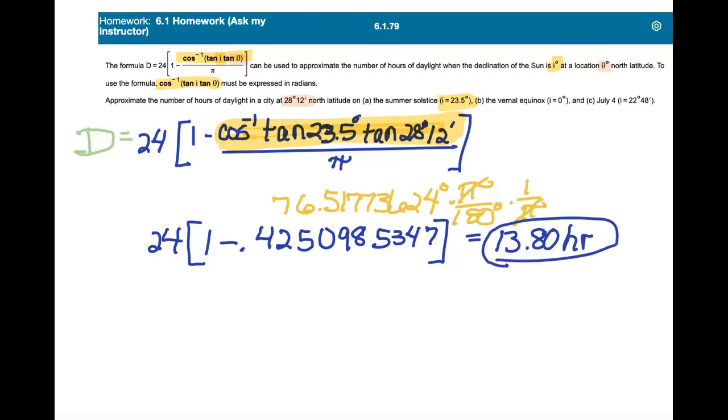Okay, so that's the answer to part A. Now I've got to do the same thing again for parts B and C. And in part B, the angle theta is now going to be zero degrees. So when I plug into my problem, okay, so this is part B.